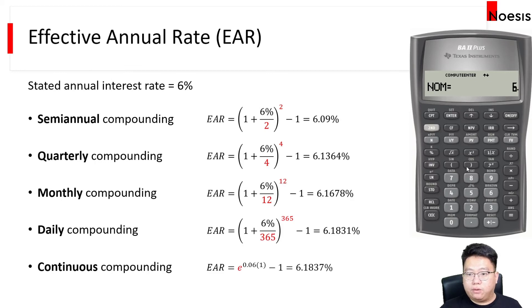For monthly compounding, that will be 12, and then we will press Compute again. So that gives you 6.1678%.